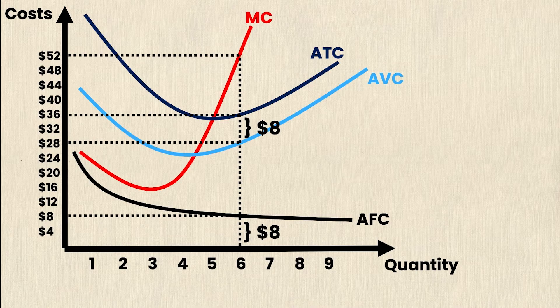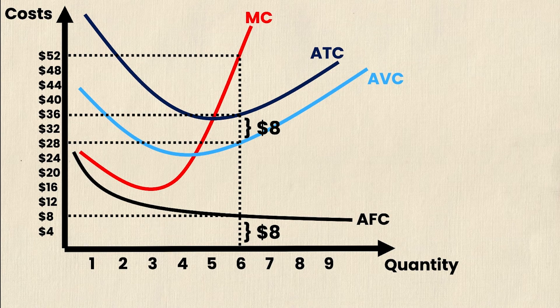So as the AFC asymptotes towards the x-axis, the ATC will asymptote towards the AVC, making that gap between them smaller and smaller.